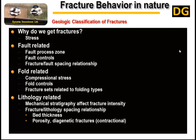Geoscientists use geomechanics approaches for fracture classification. For example, the mechanical stratigraphy law — higher elastic modulus and lower fracture toughness in brittle rocks. Bed thickness law — fracture intensity decreases with thickness. Bed curvature law — intensity increases with bed curvature, indicating higher strain. Fault zones law — delocalized intensity increases with decreasing distance to fault.